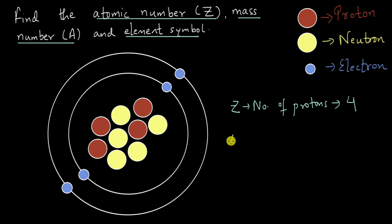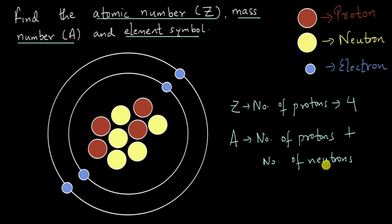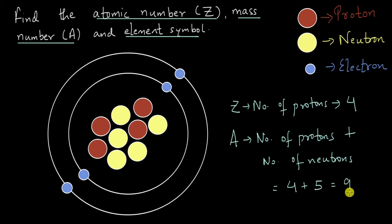Next, let's find the mass number. The mass number is the number of protons plus the number of neutrons, because these are the elementary particles that contain mass. Electrons have negligible mass compared to a proton and a neutron — these are the heavy bits of an atom. So here we have 4 protons which we already counted, and 1, 2, 3, 4, 5 neutrons. So 4 protons and 5 neutrons gives us 9.